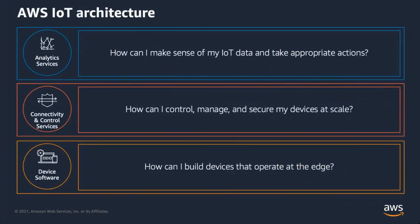AWS IoT is made up of a variety of services categorized into three layers. Starting at the bottom, we have device software — SDKs all the way up to advanced software such as AWS IoT Greengrass — for how your devices connect to AWS IoT, providing capabilities for connectivity, retries, and storing and persisting data locally. Above that is the connectivity and control services layer, essentially the IoT plumbing: a fully managed service that allows you to connect devices at scale, securely, with visibility into device status and messages being published.